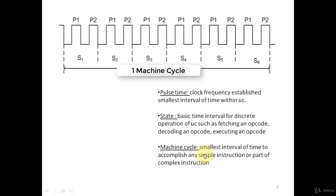Instruction cycle is made up of one or more machine cycles. 1 machine cycle equals to 6 state. 1 state equals to 2 clock pulses. Hence, 1 machine cycle equals to 12 clock period.